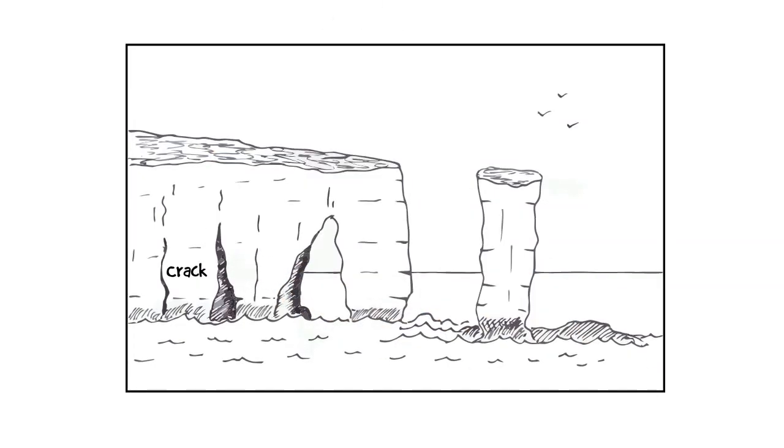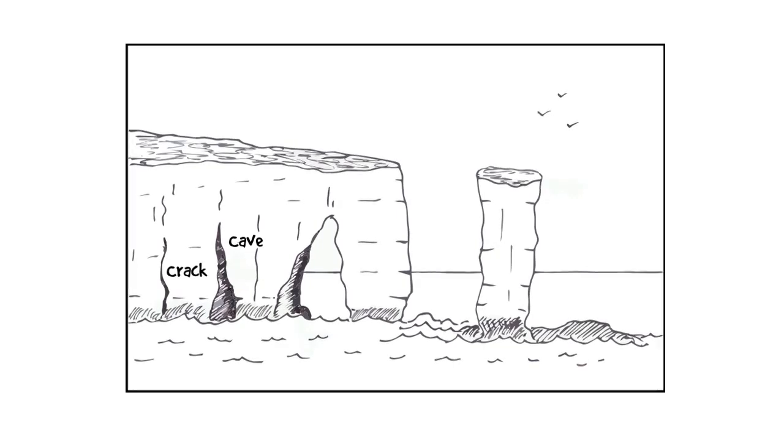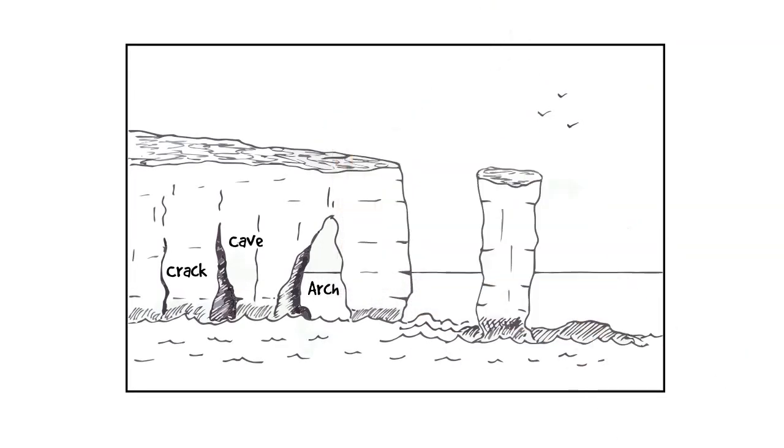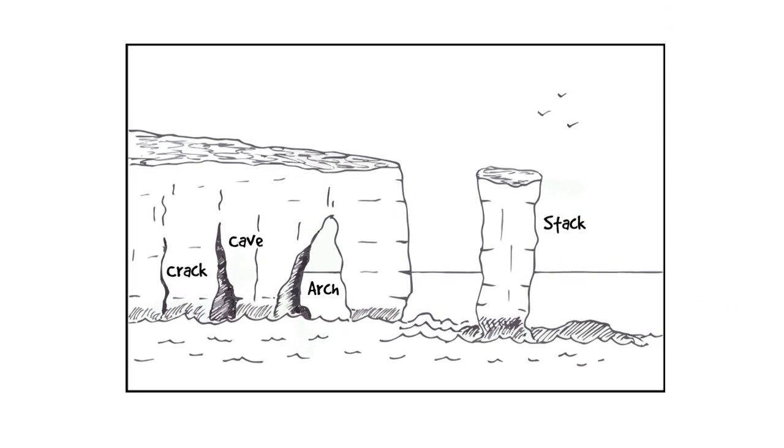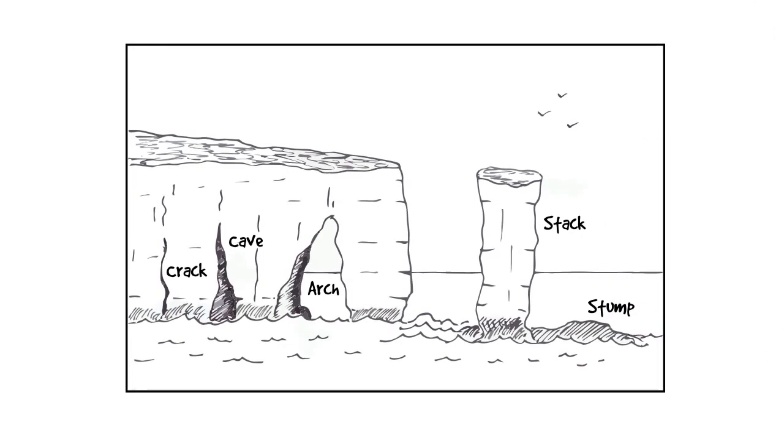Now we're going to label the various features. There's our crack that's going to be widened by wave pounding and abrasion to form a cave. And then over time, the two caves will join back to back to form an arch. And then we can see our stack will be formed at the end of the headland and our stump.